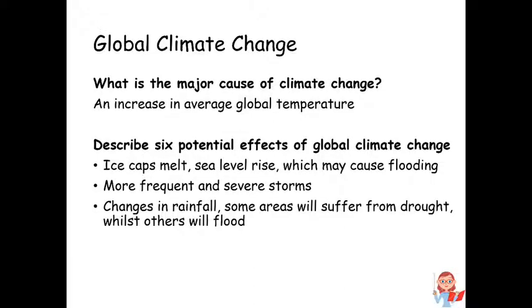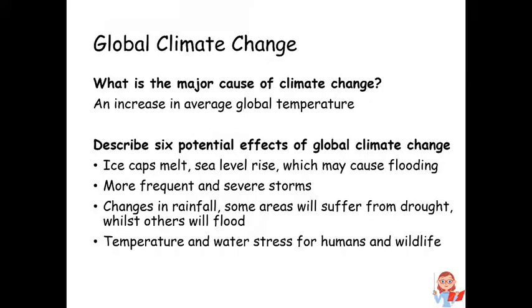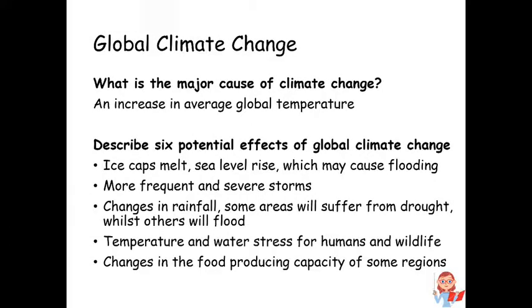Changes in rainfall. Some areas will suffer from drought whilst others will flood. Temperature and water stress for humans and wildlife. Changes in the food producing capacity of some regions. And changes in the distribution of wildlife species.